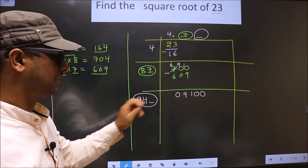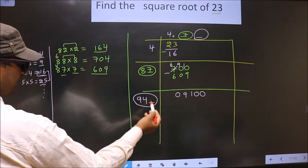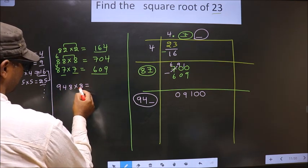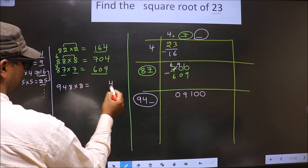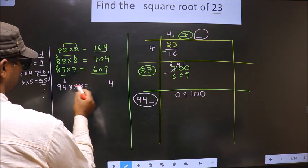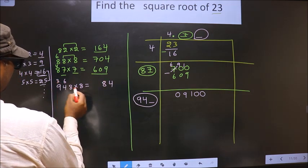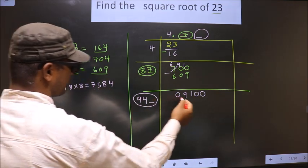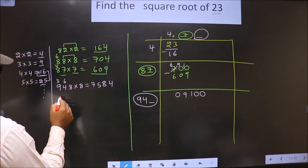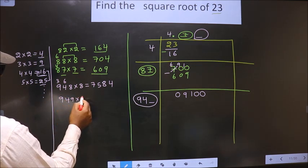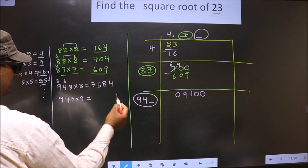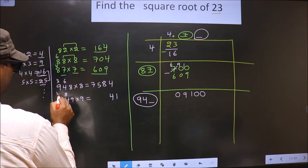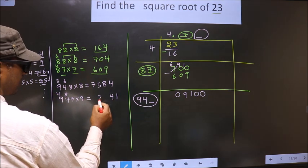So let us find the number here. If we take 8: 948 into 8. 8 times 8 is 64, carry 6. 8 times 4 is 32 plus 6 is 38, carry 3. 8 times 9 is 72 plus 3 is 75. So 7584 — this is far from 9100. So if we take 9: 949 into 9. 9 times 9 is 81, carry 8. 9 times 4 is 36 plus 8 is 44, carry 4. 9 times 9 is 81 plus 4 is 85. So 8541.